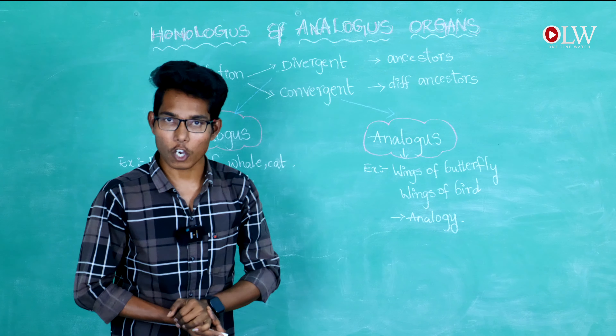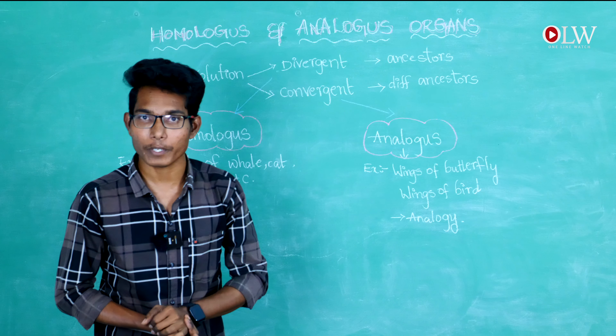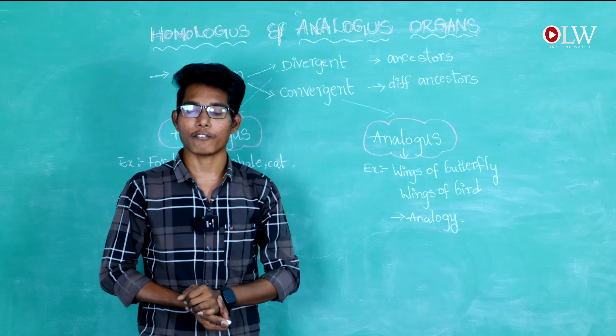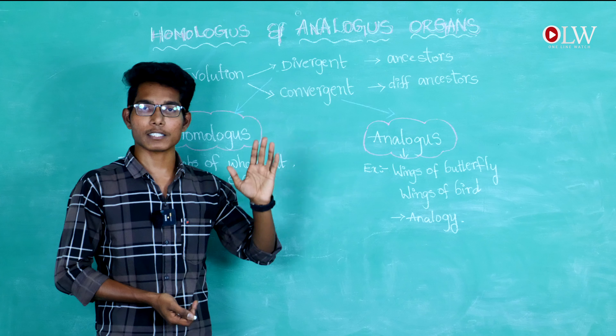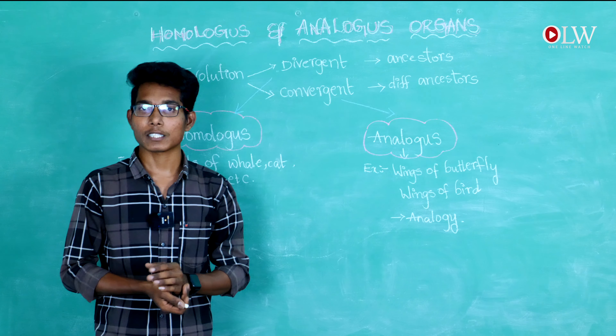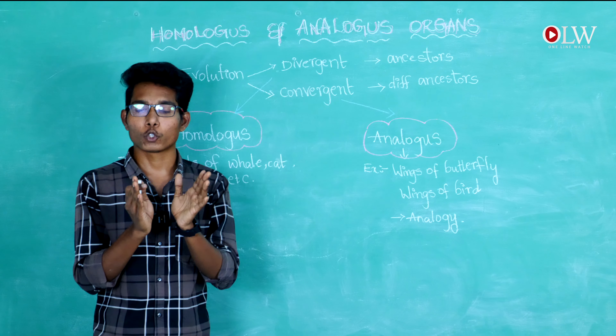For example, we can take an elephant — the previous ancestors of an elephant diverged into different lineages across generations.